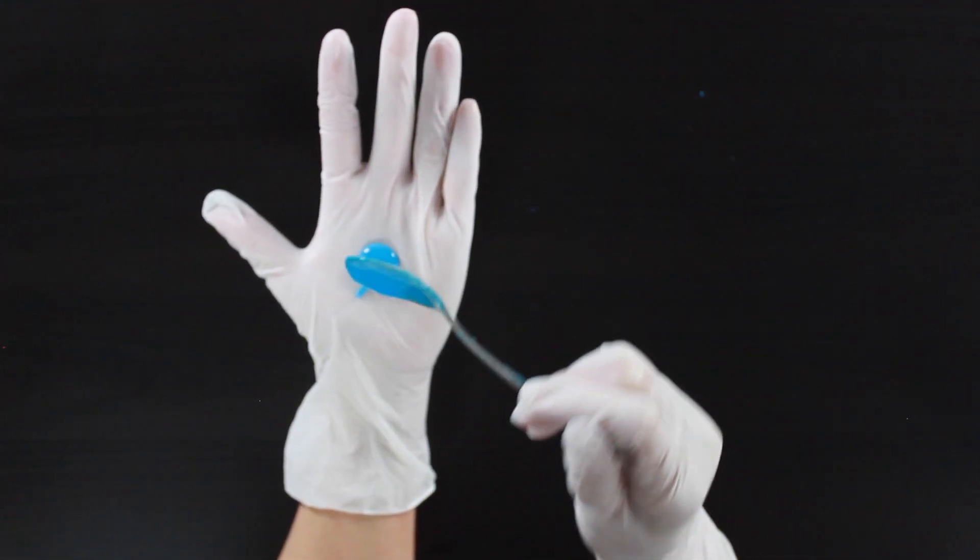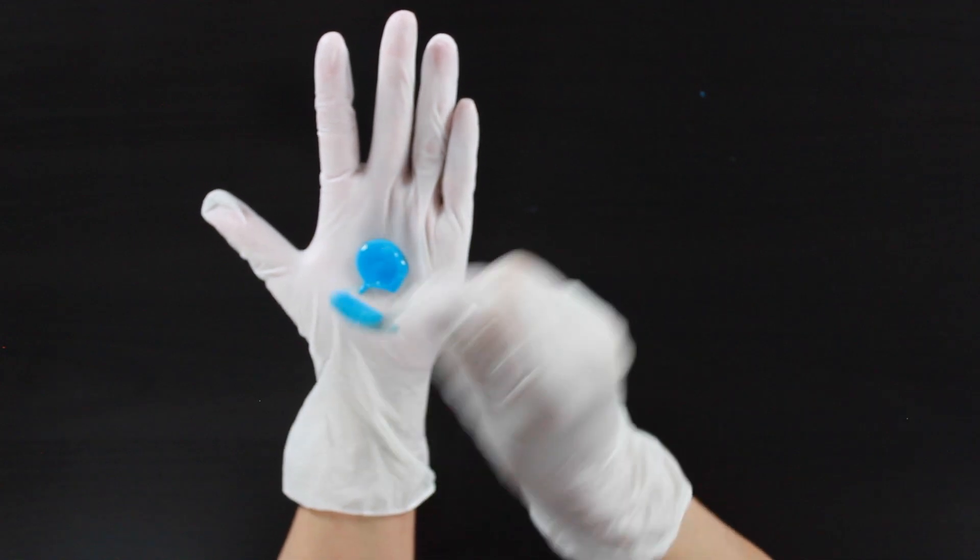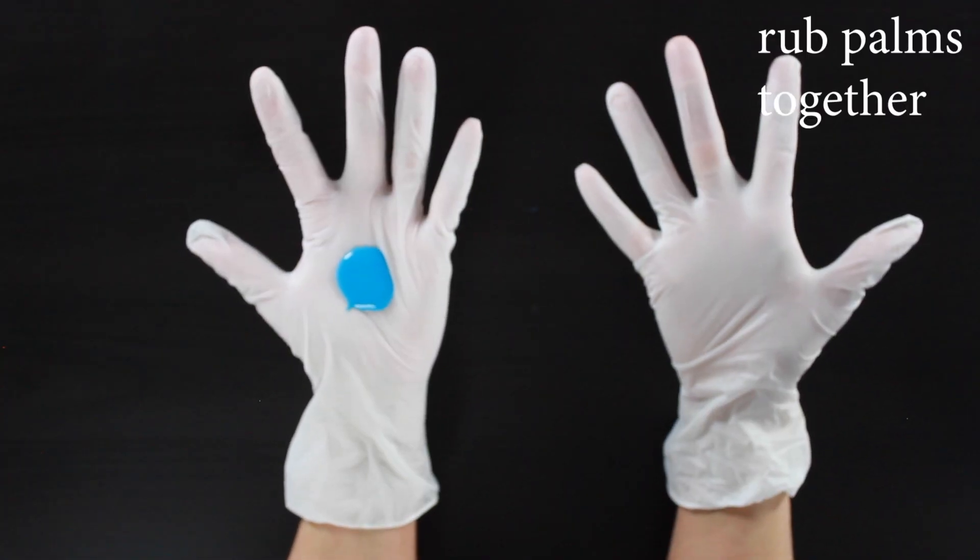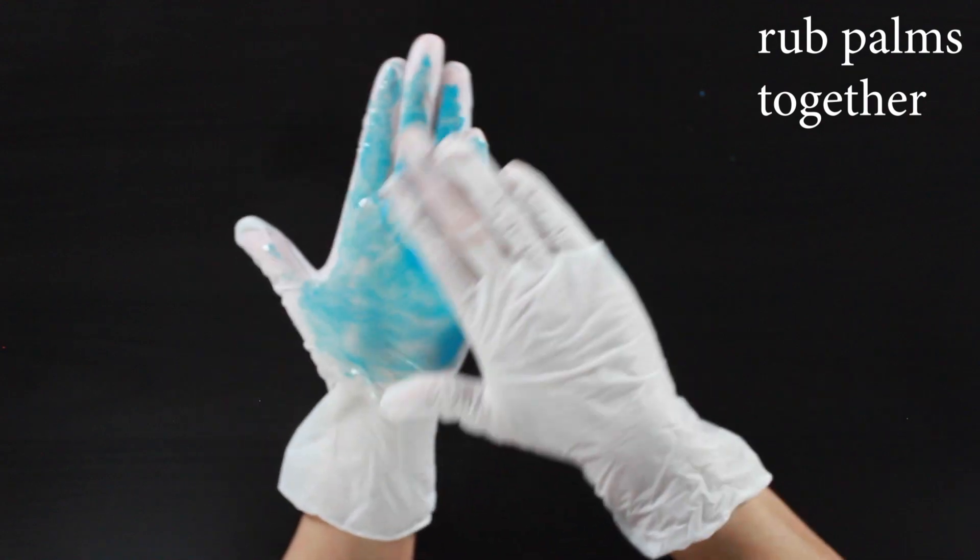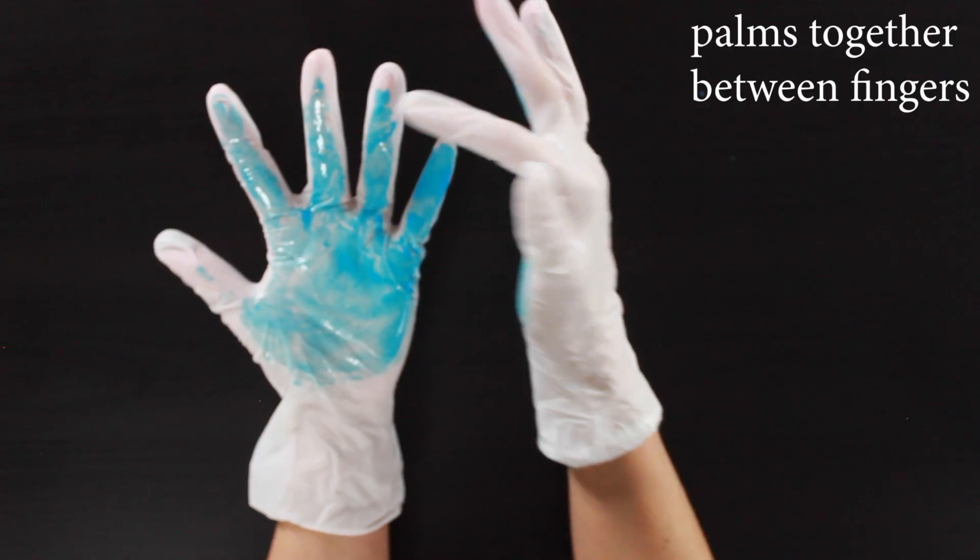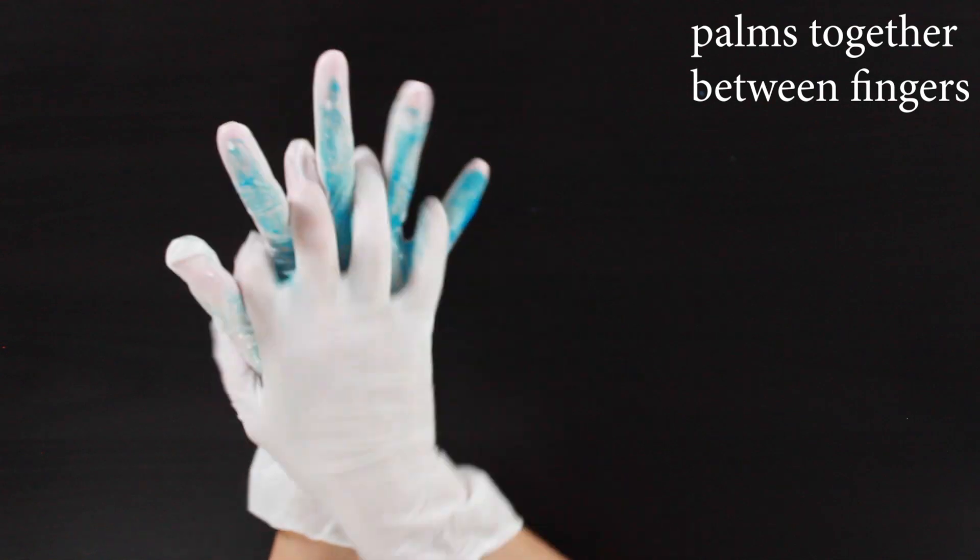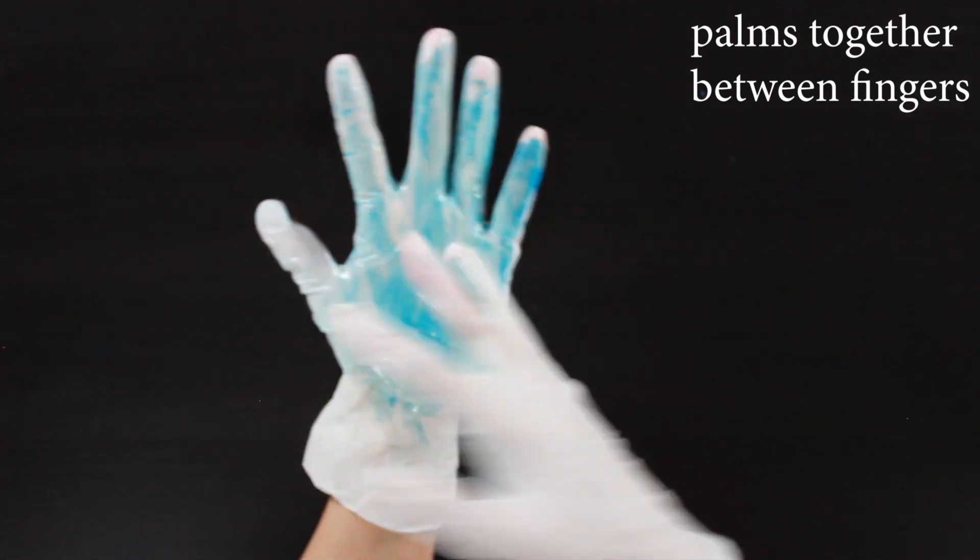Now take a spoonful of your glue mixture and put a big scoop in the palm of their hand. This is going to represent our soap. Now rub your palms together. Now rub the palms together and make sure to get in between your fingers.